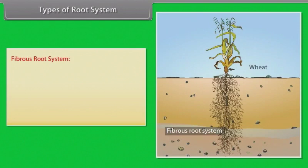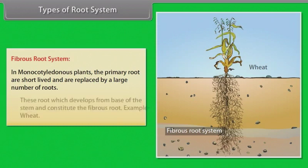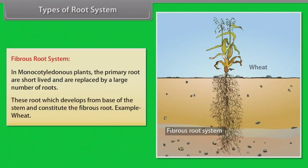Fibrous root system: In monocotyledonous plants, the primary roots are short-lived and are replaced by a large number of roots. These roots, which develop from the base of the stem, constitute the fibrous root system.